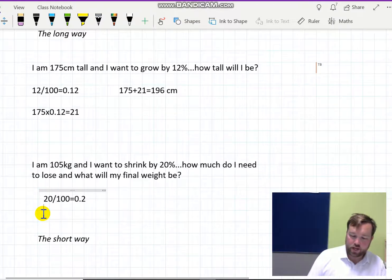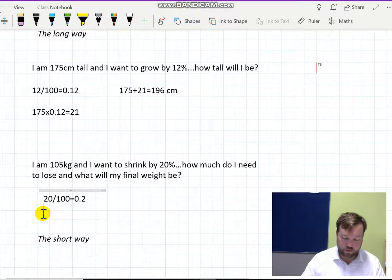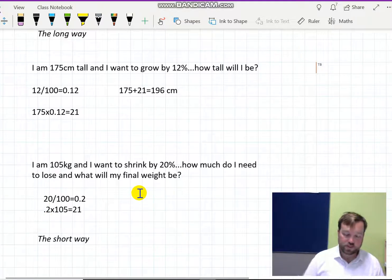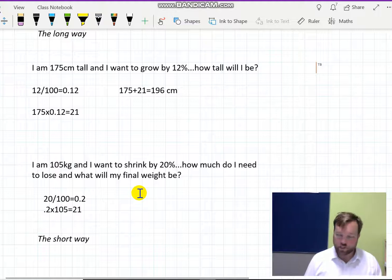Then we find out what 20% of 105 is. So we do that 0.2 times the 105, and coincidentally enough, it's 21 again. Then if we want to decrease it by 20%, which is 21 kilos, we do the 105, take 21, and our result is 84 kilos.